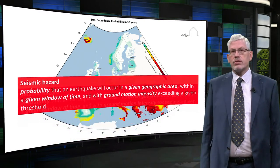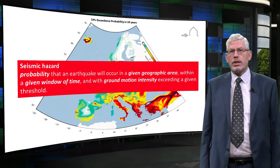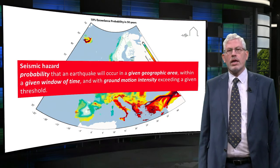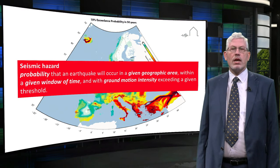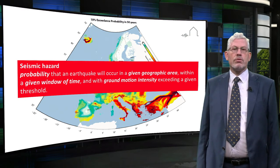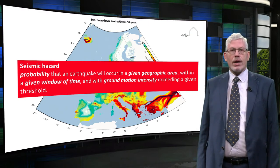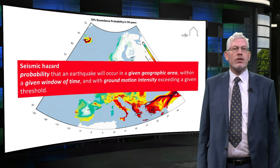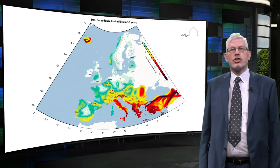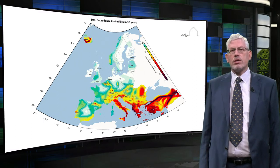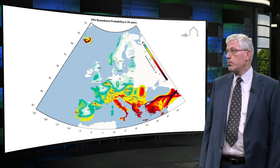A seismic hazard is the probability that an earthquake will occur in a given geographic area within a given window of time and with ground motion intensity exceeding a given threshold. Recently, the SHARE project developed a seismic hazard map to harmonise the seismic hazard across Europe, as shown in the image.